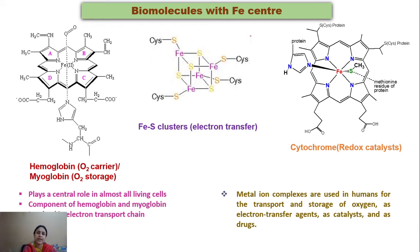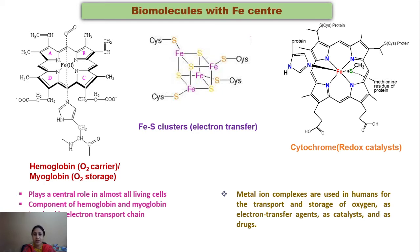Biomolecules with an Fe center include hemoglobin and myoglobin, which play a central role in almost all living cells. Electron transfer proteins include iron-sulfur clusters, which are non-heme iron proteins — no heme unit is present in these iron-sulfur clusters. Cytochromes are heme proteins that serve as redox catalysts. So metal ion complexes are used in humans for transport and storage of oxygen, and can also act as electron transfer agents, catalysts, and drugs.